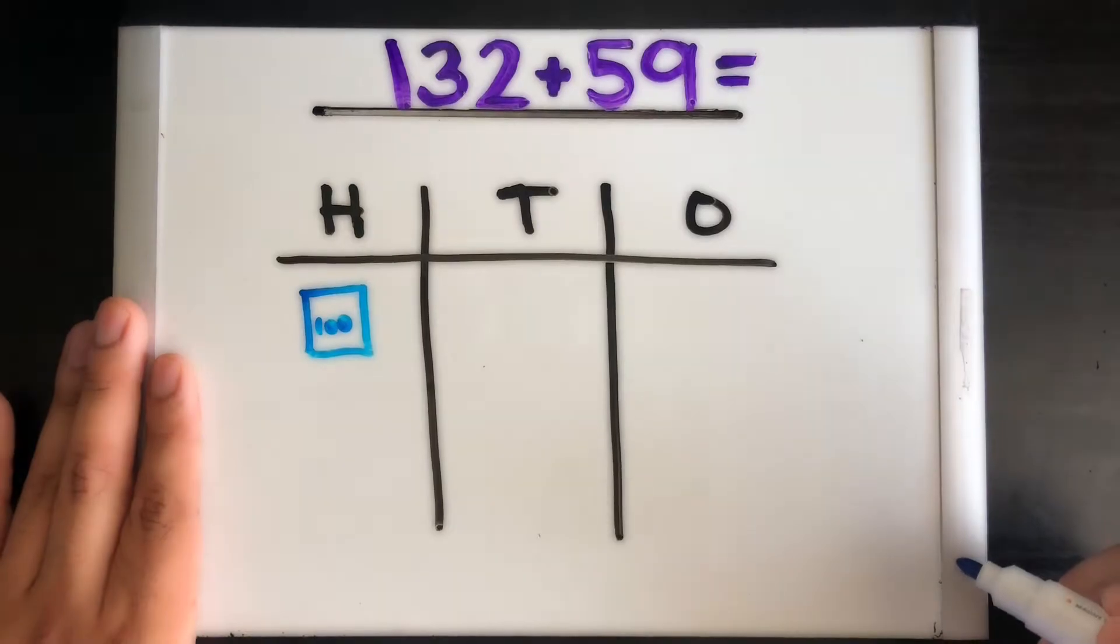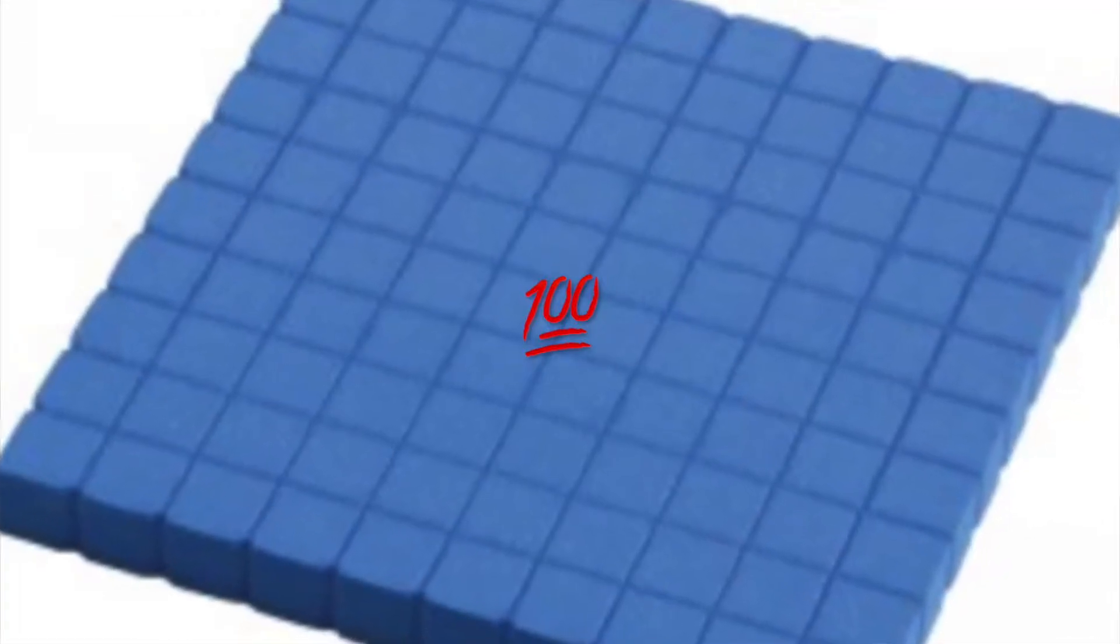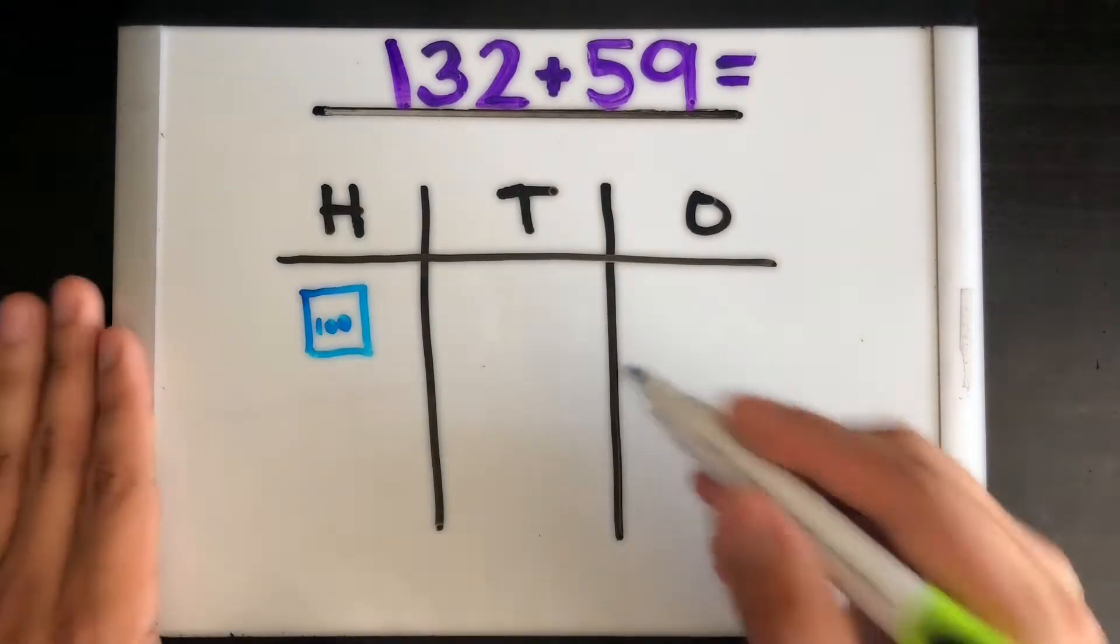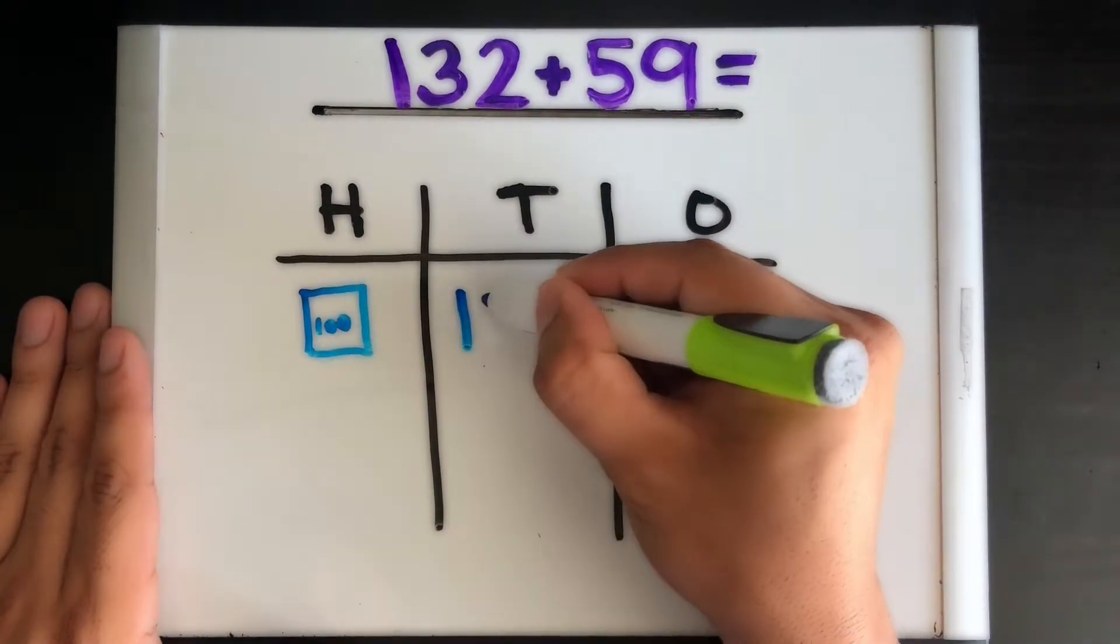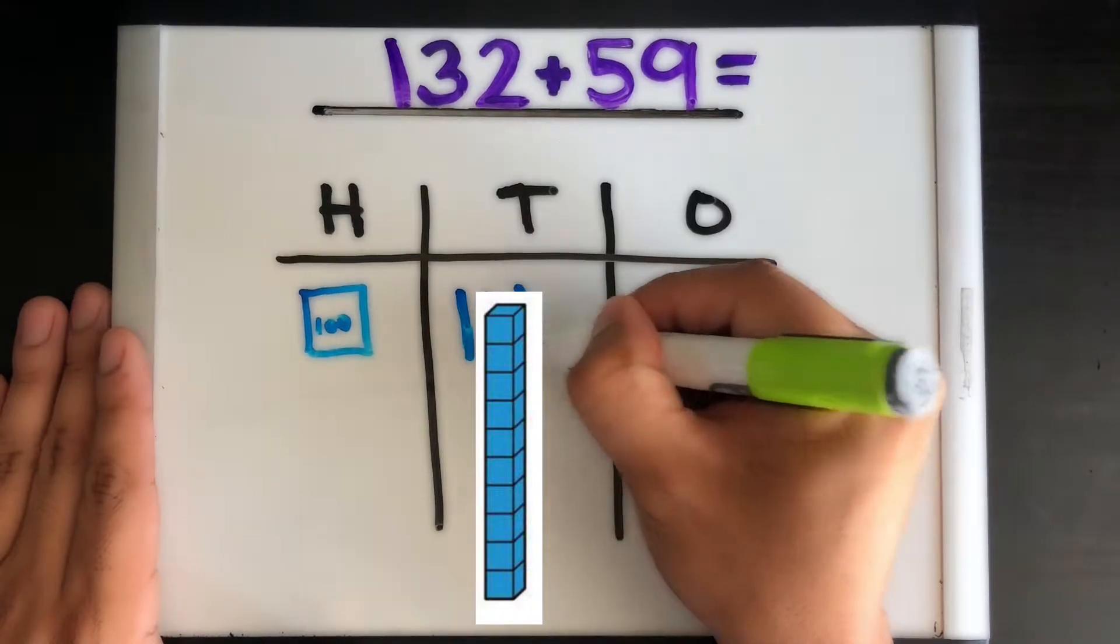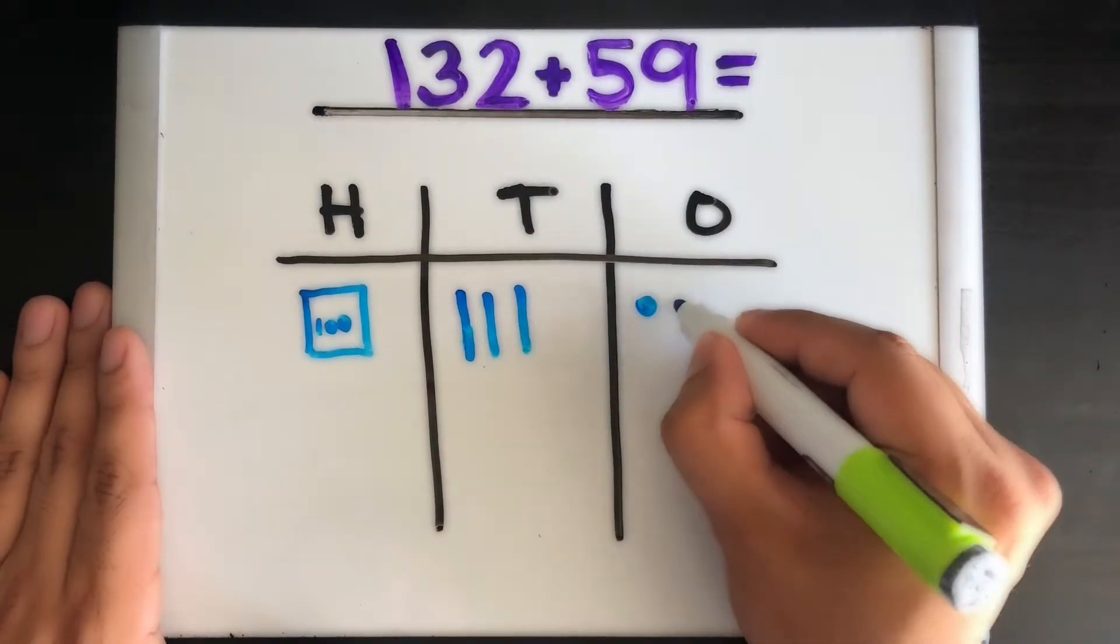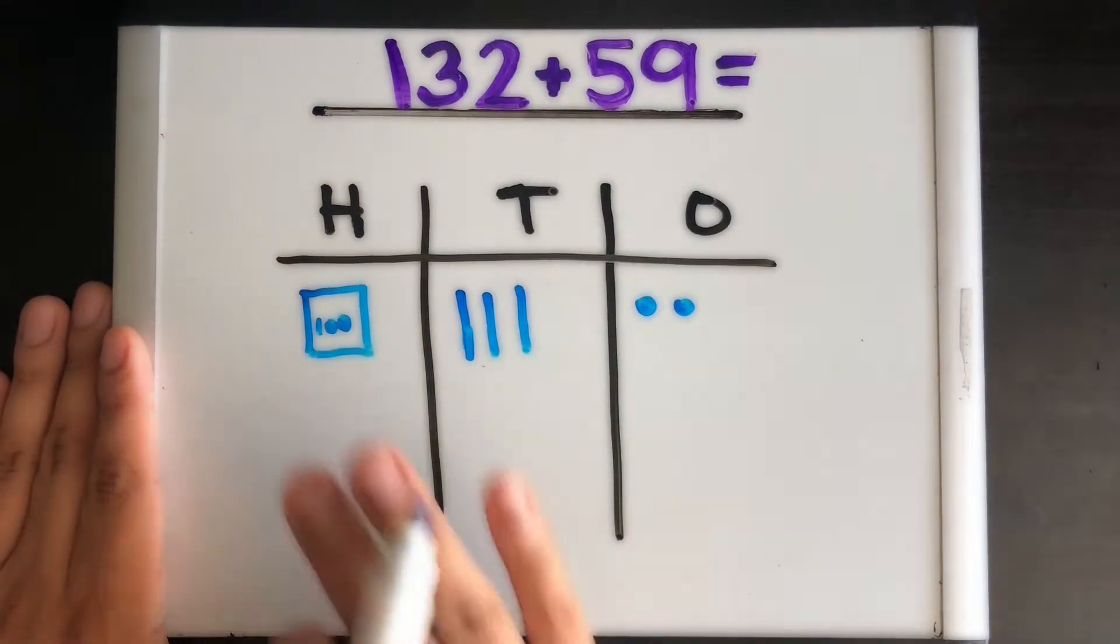We have three in the ten spot, and we learned that the tens look like these little ten sticks. We have three of them: 10, 20, 30. And we have two ones, and we know that they just look like that. Okay, so we have now built our first number out of 132.